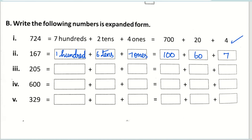Next is two hundred five. How many hundreds? Two hundred. How many tens? Zero tens. And how many ones? Five ones. That gives you two hundred plus zero plus five.